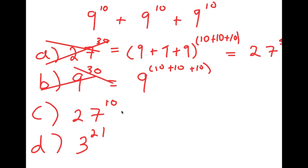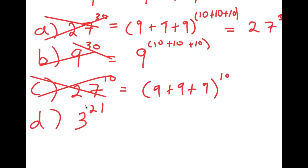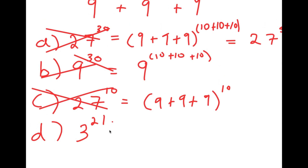For C, 27 to the power of 10 was gotten by adding the bases but keeping the exponent the same. This is also wrong — that's not how you add exponents. So by process of elimination, D, 3 to the power of 21, is the right answer, and we're going to see how to get it.